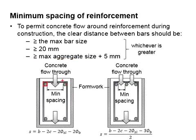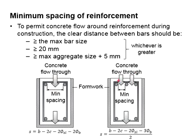These are the reinforcement bars, stirrups, and formwork. During casting, concrete will flow through the reinforcement and be compacted within the formwork. The spacing we are referring to is the smallest clear distance between reinforcement bars.